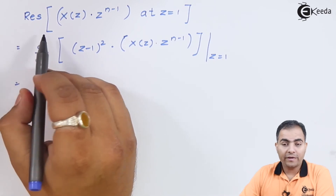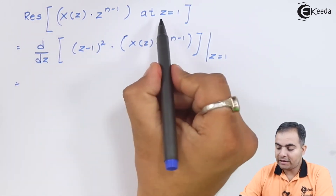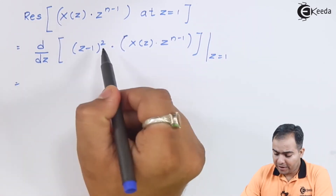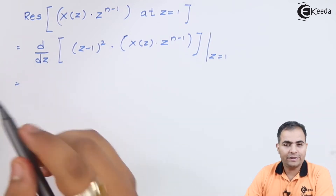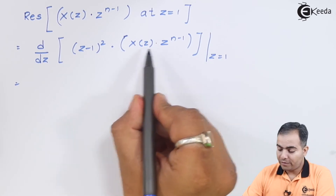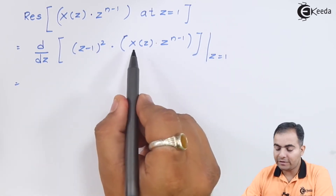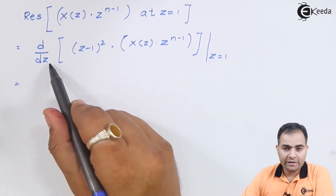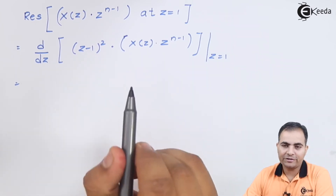Now we find the residue for Z minus 1 the whole square, i.e., at Z equals 1, of X(Z) · Z^(n−1). Since we have a repeated pole, we differentiate the function with respect to Z. First, multiply Z minus 1 whole square with X(Z) · Z^(n−1), then differentiate that function, and after differentiating substitute Z equals 1.